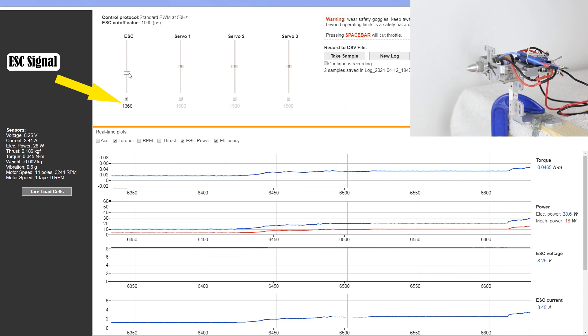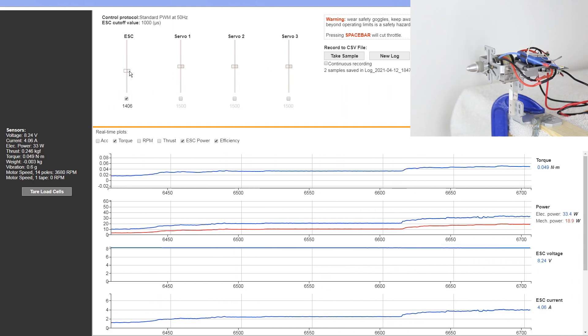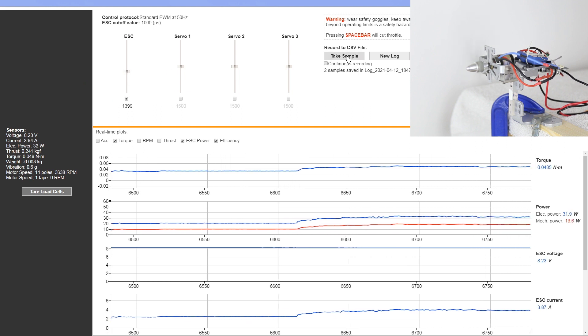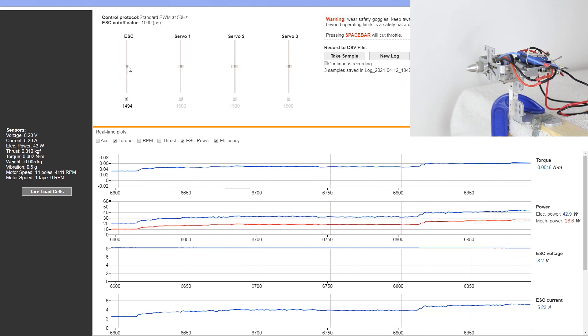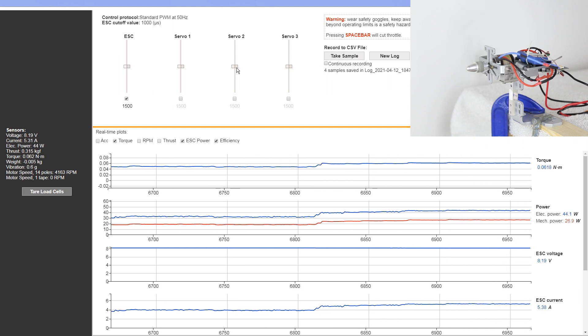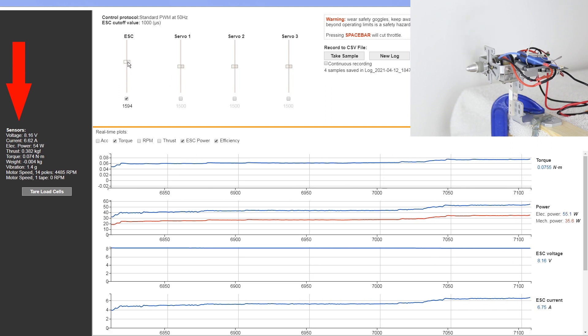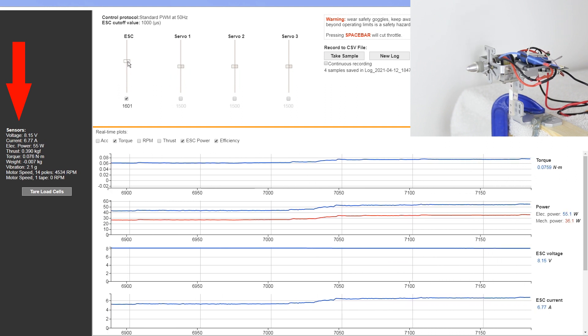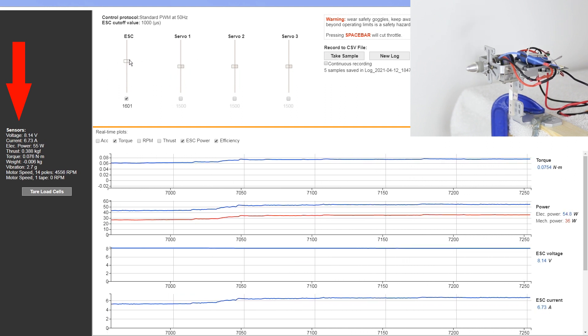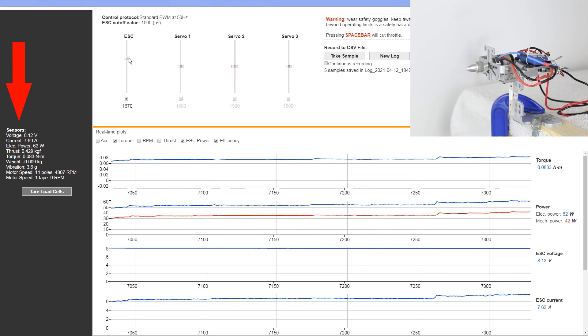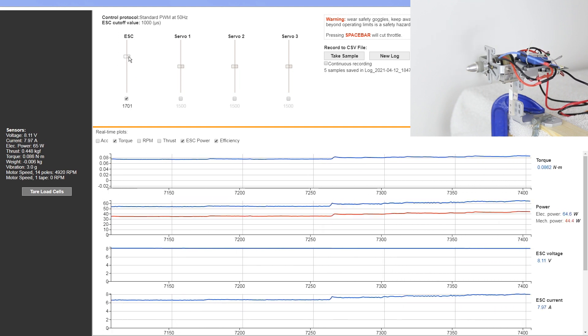We're going to continue this pattern all the way until we get to the maximum throttle position. Every time I bring the mouse over here and take a sample, I am recording the exact values that you see on the left hand side under the sensors column. All those values get stored into an excel spreadsheet where I am able to then construct charts as well as graphs using all of this data.